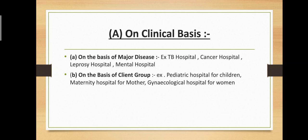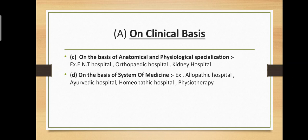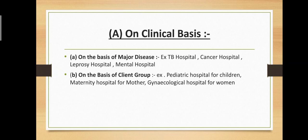On clinical basis, the four subtypes are: first, on the basis of major diseases — example: TB hospital, cancer hospital, leprosy hospital, mental hospital. Second, on the basis of client group — example: pediatric hospital for children, maternity hospital for mothers, gynecological hospital for women. Third, on the basis of anatomical and physiological specialization — example: ENT hospital, orthopedic hospital, kidney hospital. Fourth, on the basis of system of medicine — example: allopathic, Ayurvedic, homeopathic, and physiotherapy hospital.